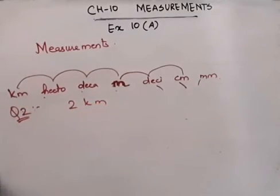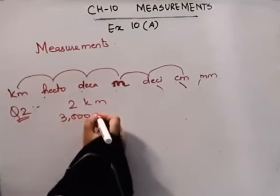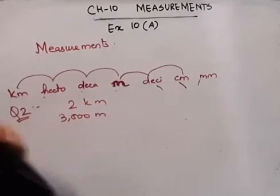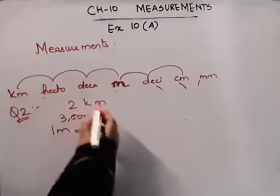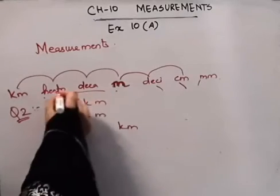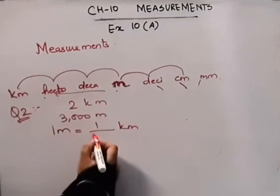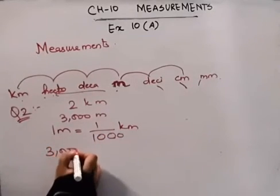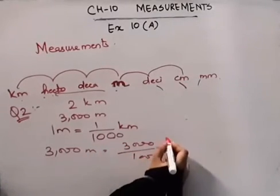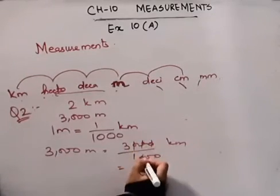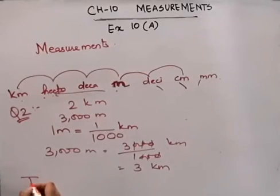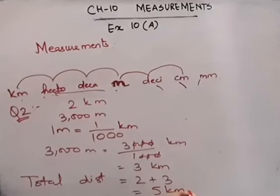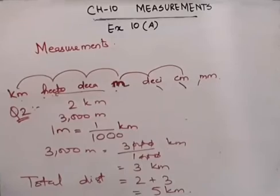Question number two: Rena walked 2 kilometers in the morning and 3,000 meters in the evening. What is the total distance she covered? We'll work in kilometers. Moving towards the left hand side means we divide. Three steps to the left means divide by 1,000. So 3,000 meters divided by 1,000 equals 3 kilometers. Total distance equals 2 kilometers plus 3 kilometers, which equals 5 kilometers. Clear?